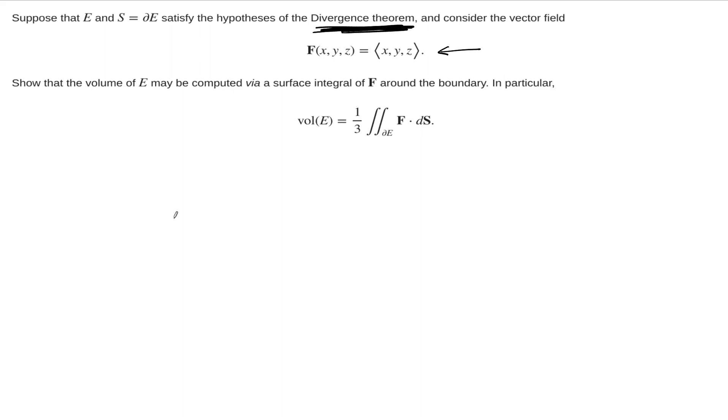So let's go ahead and do it. The first thing we should do is compute the divergence of f. So the divergence of f, remember, is the sums of the component partial derivatives here. So it's dx dx plus dy dy plus dz dz. And of course, each one of these derivatives is one.